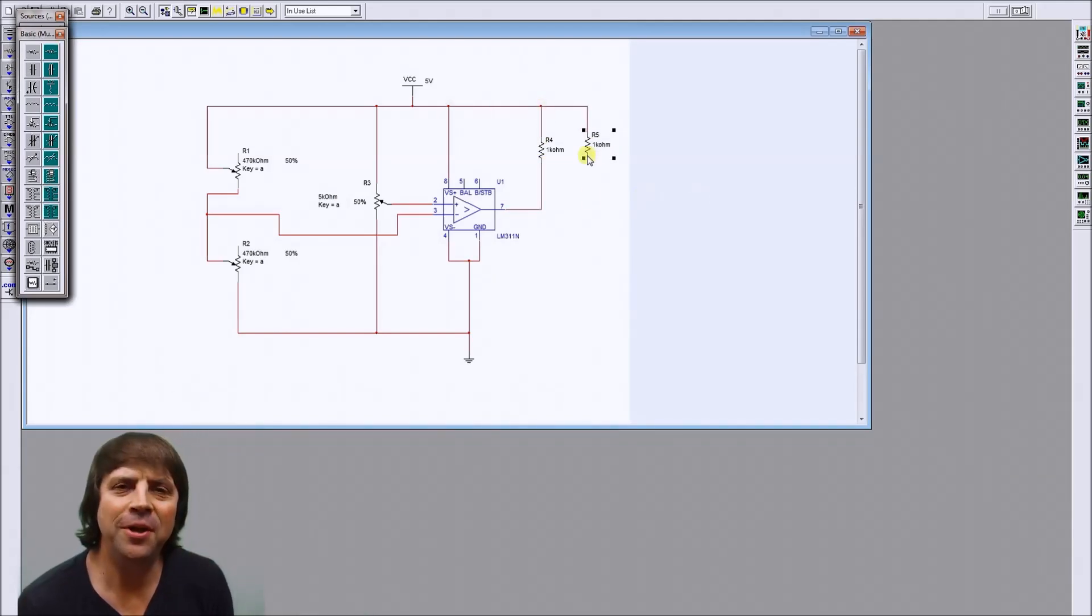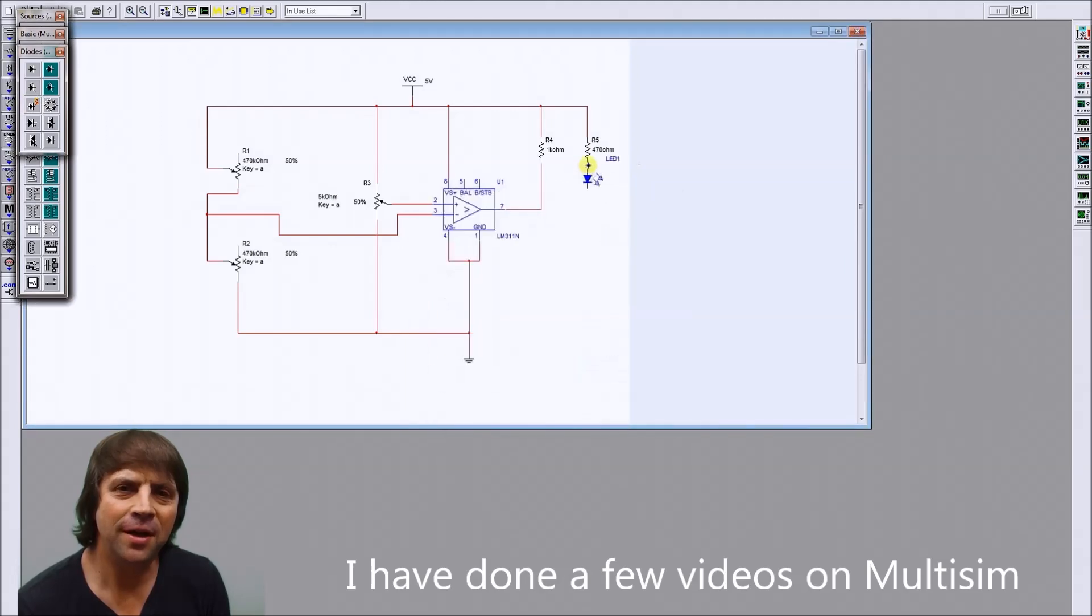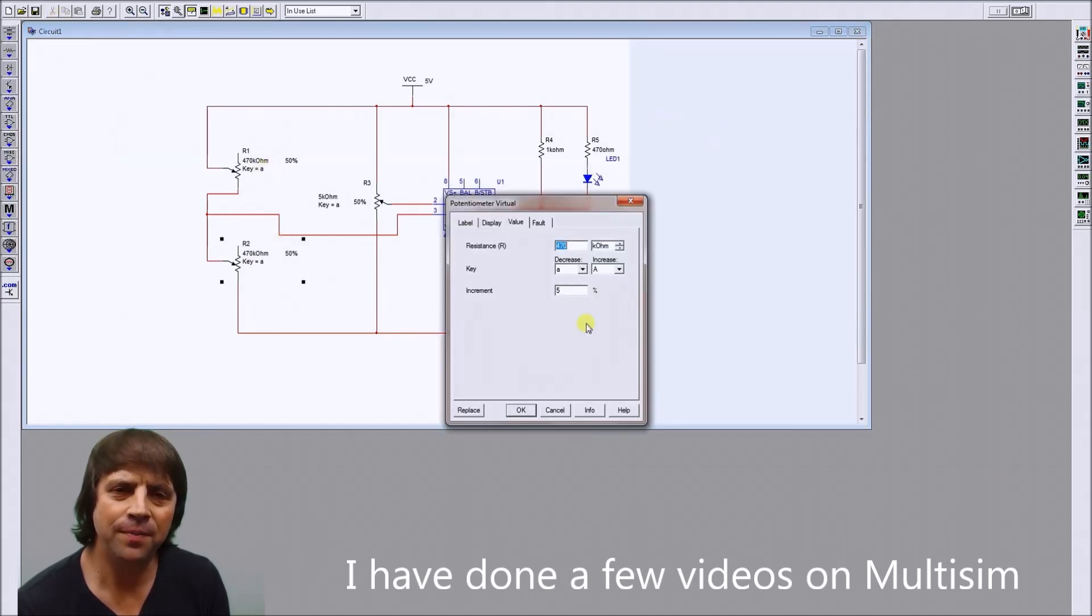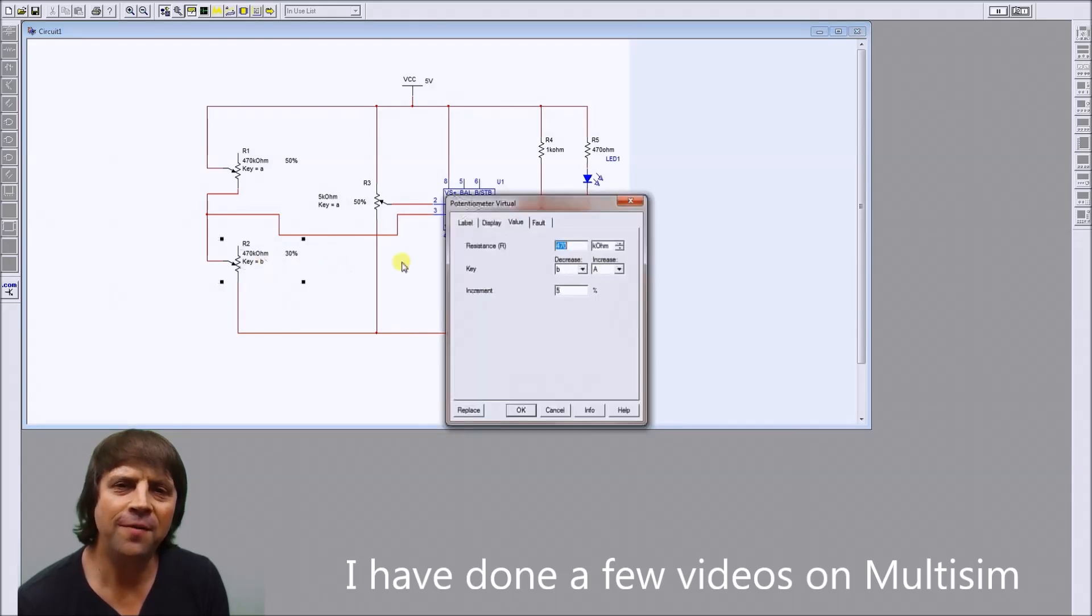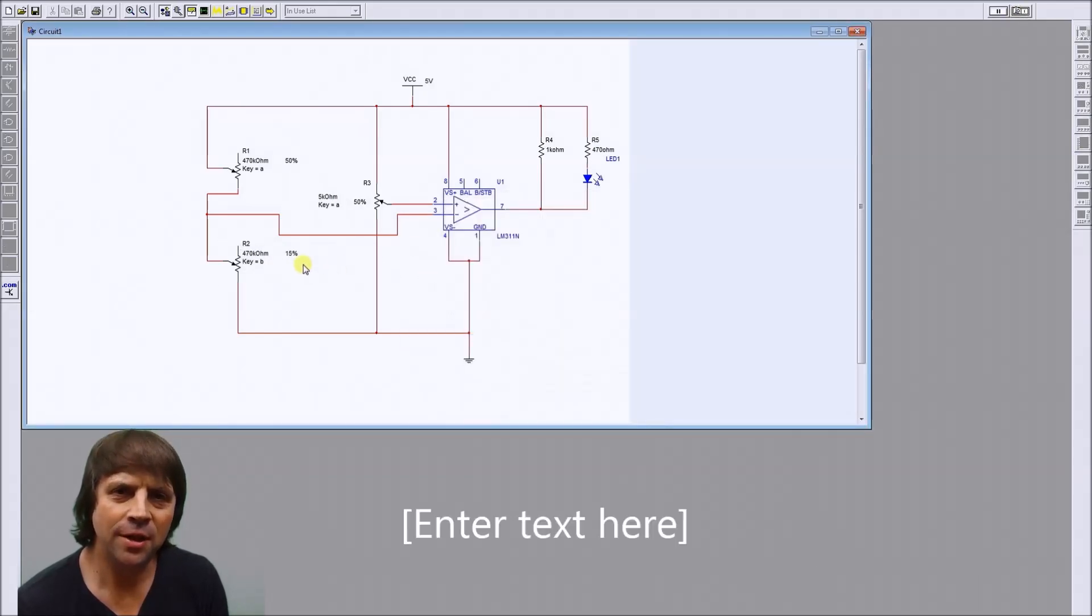In Multisim I use a potentiometer to model the LDR and a variable resistor above it. Both are 470kohms and I use a 5k potentiometer for the steady voltage.